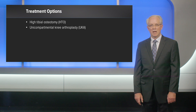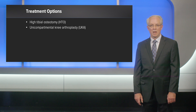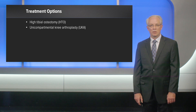I felt at this time her treatment options included either a high tibial osteotomy or unicompartmental knee arthroplasty. However, because of her young age and high activity level, I felt that she would do much better with a high tibial osteotomy. It gave her a much better chance of an active lifestyle and did not burn bridges for the future for her.